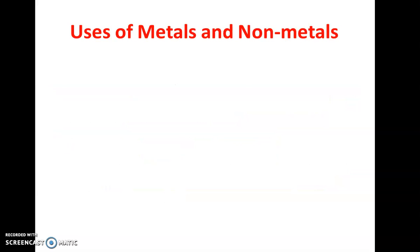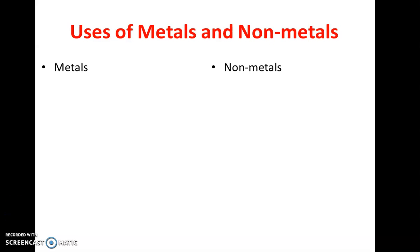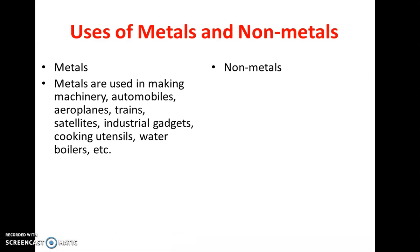Now the last topic of this chapter is the uses of metals and non-metals. Metals are used in making machinery, automobiles, aeroplanes, trains, satellites, industrial gadgets, cooking utensils, water boilers, etc.